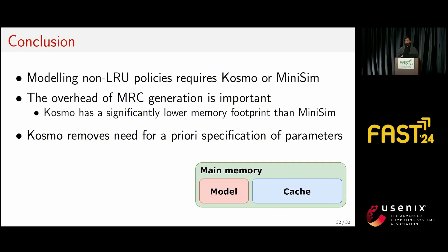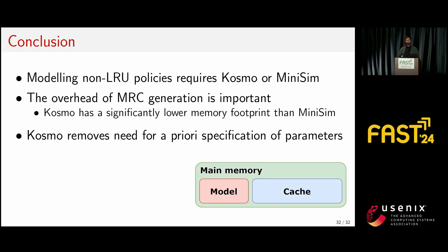In conclusion, modeling any non-LRU eviction policy currently requires either Cosmo or MiniSim. The overhead of MRC generation is important in terms of compute and memory usage, especially if the model is running on the same physical server as the cache, since any resources consumed are taken away from the cache. Cosmo has a significantly smaller memory footprint than MiniSim and removes the need for prior specification of configuration parameters, as it can reconstruct dynamically any cache size for any eviction policy during runtime. Thank you, and I'm available for questions.